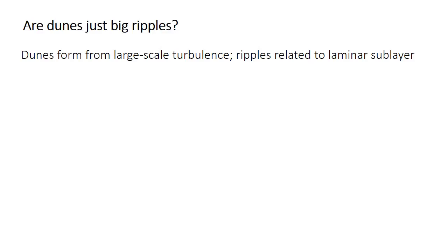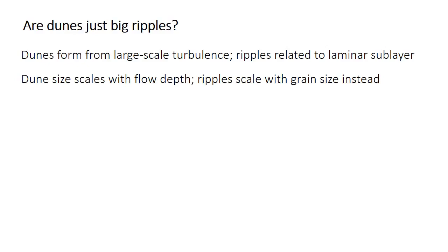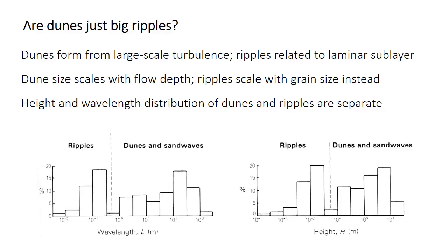Are dunes just ripples that get really big? Despite their similarities, dunes and ripples form in fundamentally different ways. Dunes form from large-scale turbulence in the turbulent sublayer of the boundary layer, but ripples are related to variations within the laminar sublayer. The two bedforms also scale differently: the size and spacing of dunes is related to the flow depth and both increase as the flow gets deeper, but ripple size is independent of flow depth — instead, ripples get bigger when the grain size gets bigger. There also seem to be two distinct peaks in the distribution of height or spacing, one at smaller wavelengths for ripples and another broader peak for dunes at larger sizes.